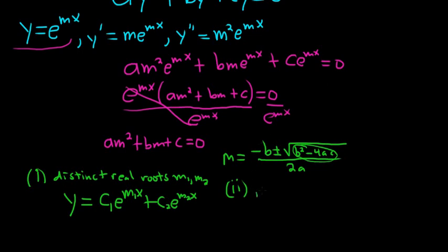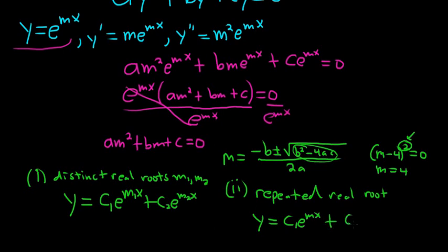Case two: say instead you had a repeated real root. That would mean something like m minus 4 quantity squared equals 0, so you would get m equals 4 and the multiplicity is 2, so the 4 appears twice. In this case, the solution would be c1 e to the mx plus c2 x e to the mx. This is assuming our repeated real root is m. Whenever you have a repeated real root m, if e to the mx is a solution, you could check that x times e to the mx is also a solution. These are both linearly independent. Therefore, a linear combination of these would form the general solution.